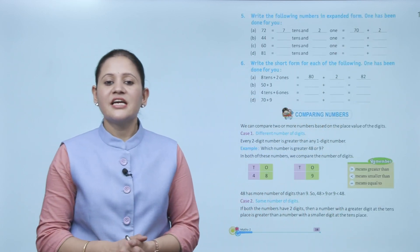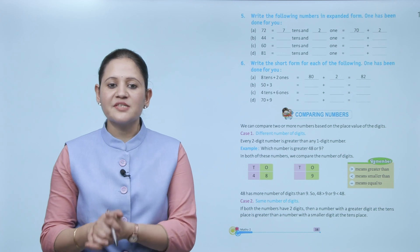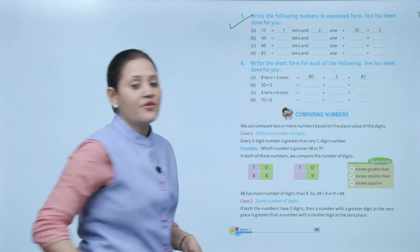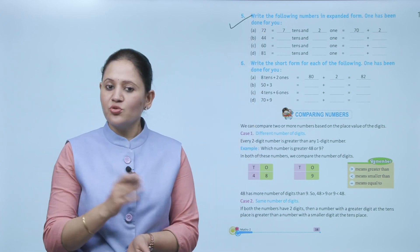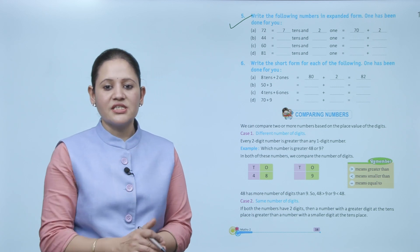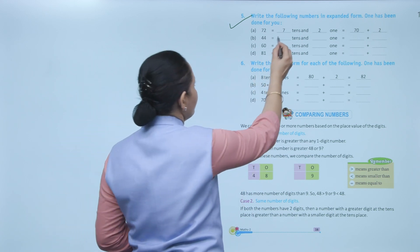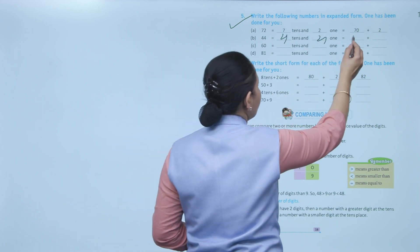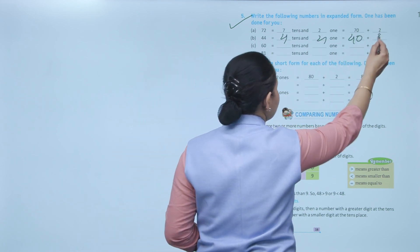Next: write the following numbers in expanded form — one has been done for you. 8 tens plus 2 ones: 8 tens means 80, 2 ones means 2. For 7 tens plus 2 ones: that is 70 plus 2. Next is 44: 4 tens and 4 ones, so 4 tens means 40 and 4 ones means 4.